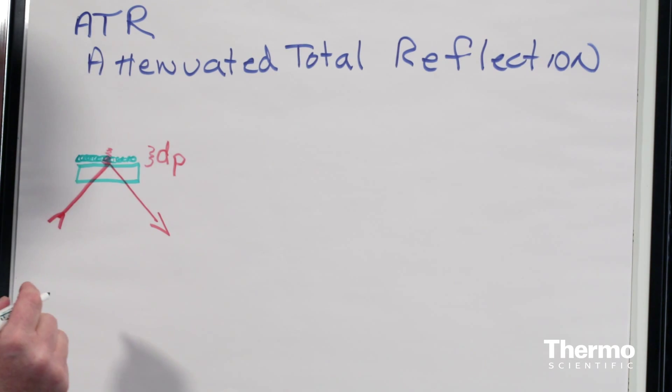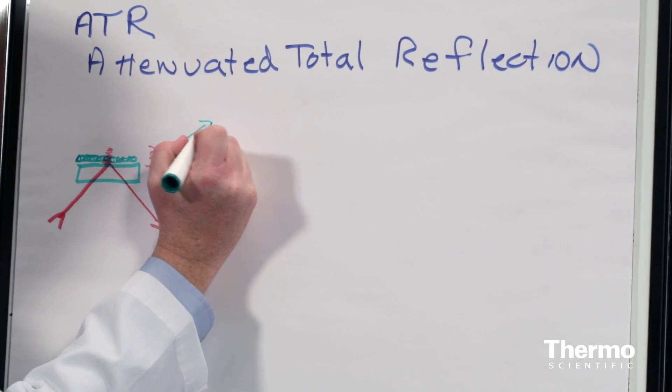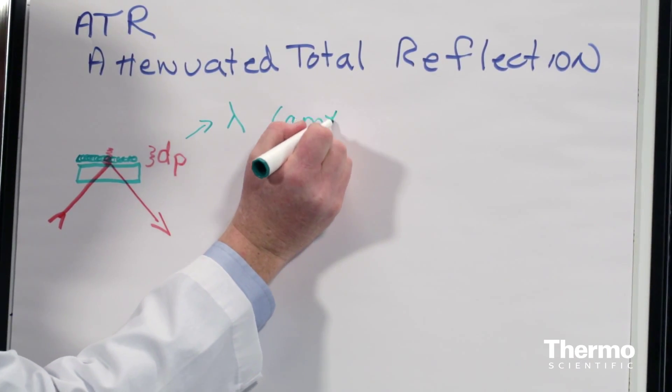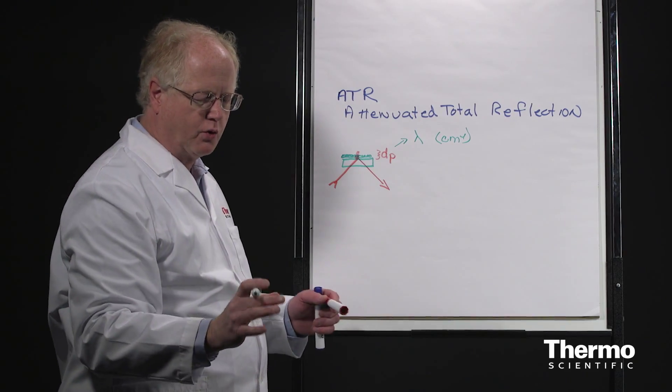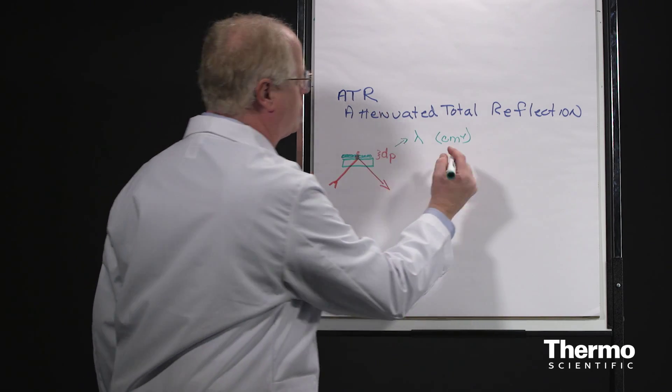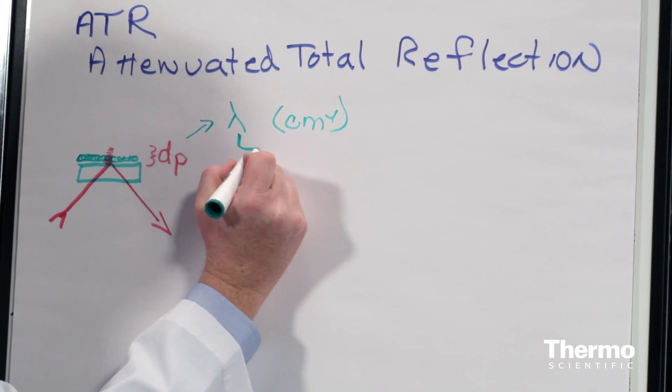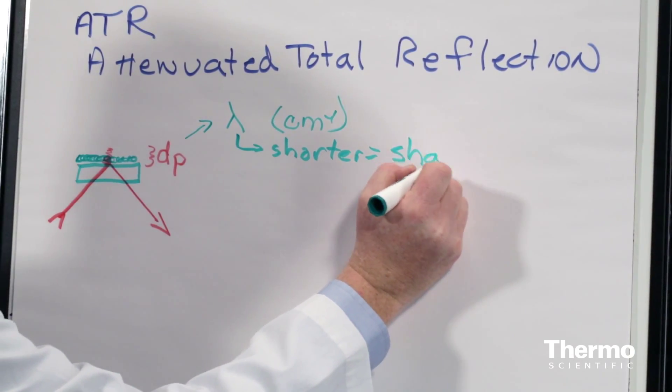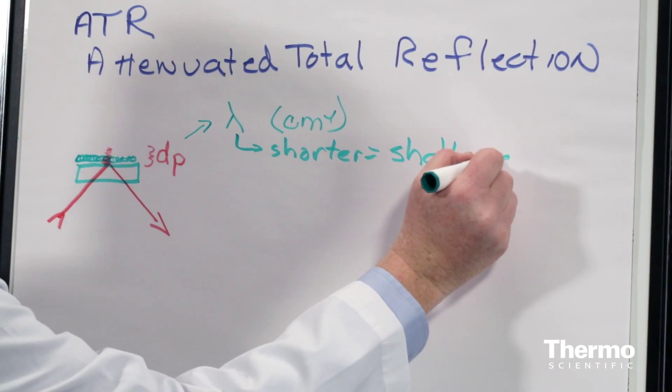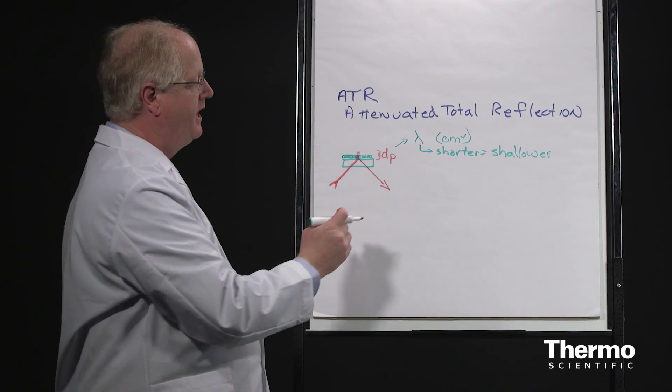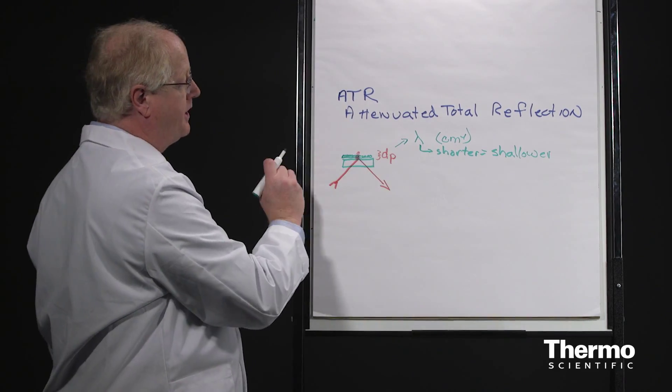What affects the depth of penetration? One thing is the wavelength or wave number of the light. As the wave number gets larger or the wavelength gets shorter, the energy goes up, and the depth of penetration drops. So let's write this as shorter equals shallower. As we sweep across the infrared range, it goes from penetrating deeply to penetrating less deeply.